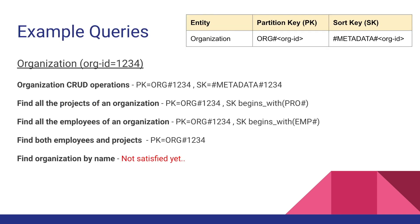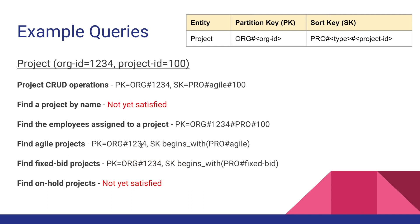Let's start from where we left off and move on to the example queries for projects. Here's the project entity. The partition key for the project is org hash org ID, and for the sort key we use the prefix pro hash for project, then the type of the project, and finally the project ID.